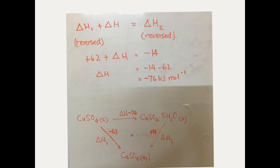So, reversing these two values and then solving for delta H, we see that it comes to negative 76 kilojoules per mole. And now you can compare this value with the literature values and determine the percentage of error in your experiment.